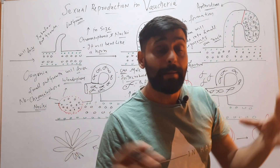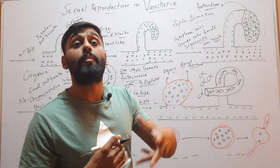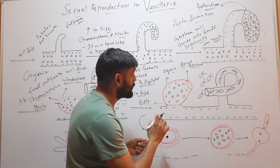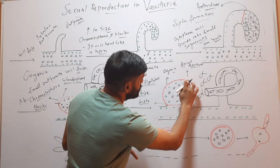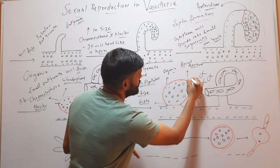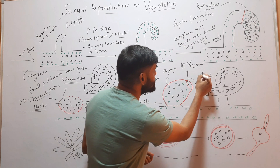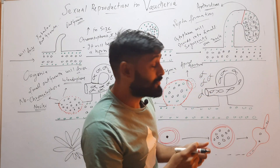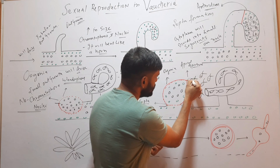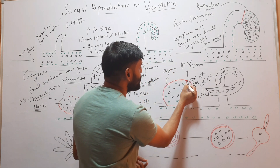Both the Antheridium and Oogonium will open at the same time. On opening of the Antheridium, biflagellate Antherozoids come out and swim in the water. At the same time, some cytoplasm from the Oogonium oozes out through the apical aperture and forms a mucilaginous drop. The swimming Antherozoids, when they reach that drop, will entangle in it and eventually come inside.